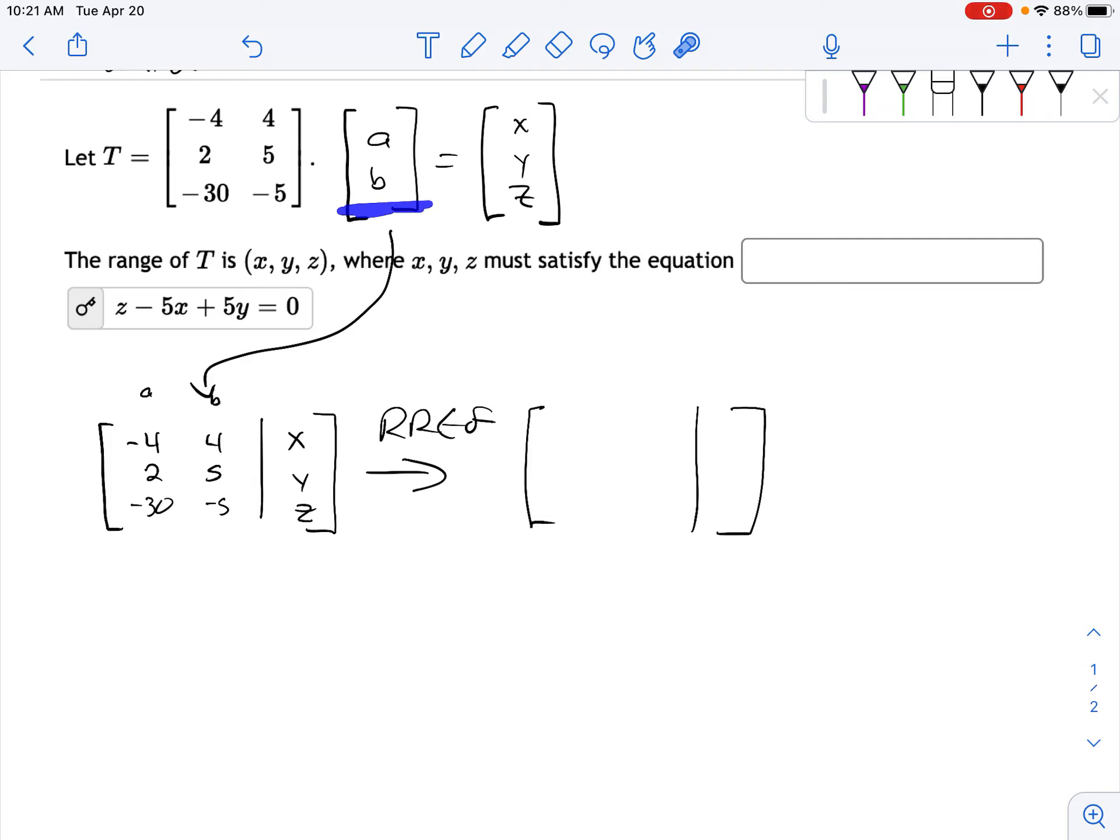and this equation is going to tell us the plane that is the range of this linear transformation. Because this takes in something from a plane and it spits out vectors in R3, but it doesn't give you all of R3. It only gives you a plane. Now, unfortunately, when we do this reduced row echelon form, we can't use octave